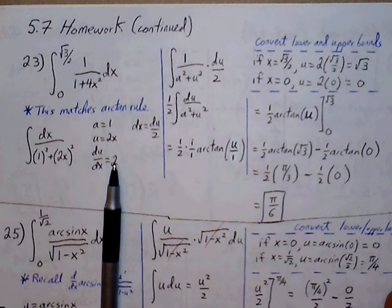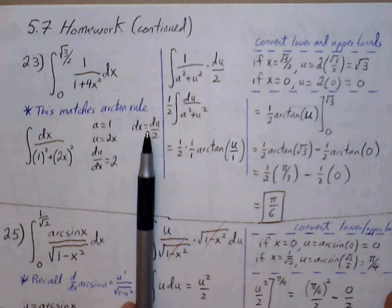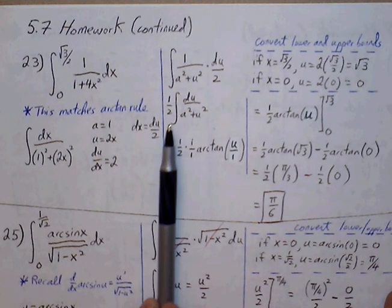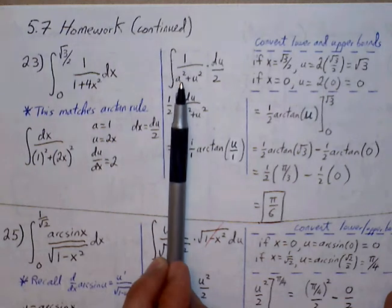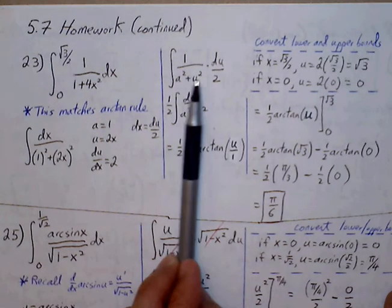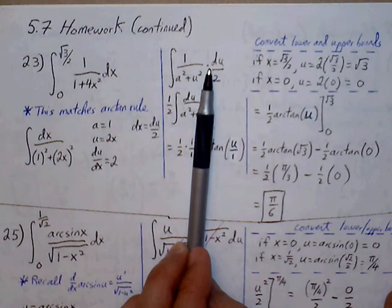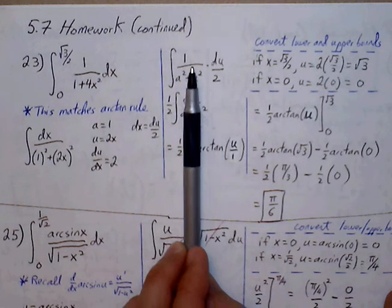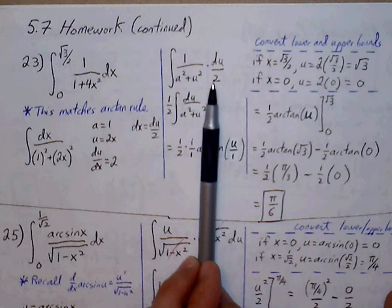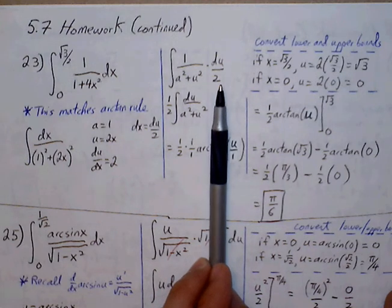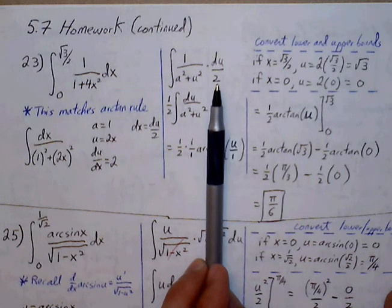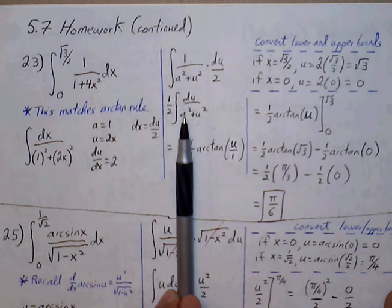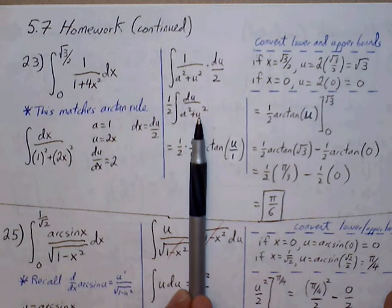Find the derivative: du/dx equals 2. Solve for dx, which is du/2, and we make our substitution from x's into u's. So 1 over (a² + u²) times dx gets replaced with du/2. Nothing needs to be cancelled out, but we need to keep track of that coefficient. The 2 in the denominator can be pulled out as 1/2.